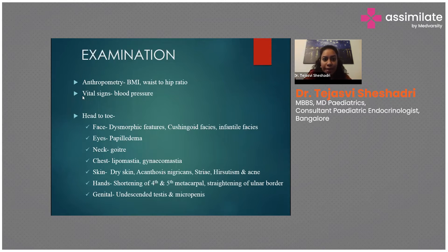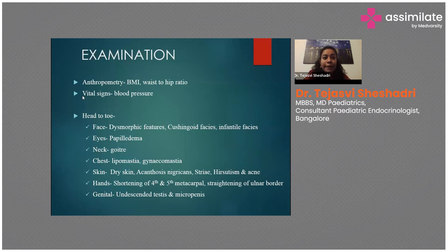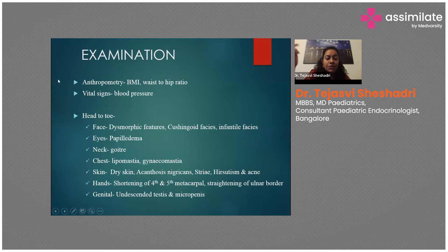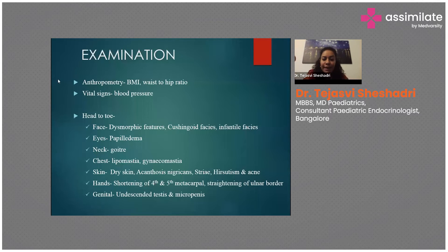On examination, assess BMI to diagnose obesity. Waist-to-hip ratio: more than 0.95 in boys and more than 0.85 in girls. Waist circumference more than the 90th centile is significant. Check vitals — blood pressure is very important; if the child is hypertensive, manage with antihypertensives or lifestyle measures. The head-to-toe examination gives clues about complications and cause. In exogenous obesity the child may be completely normal on examination except for complications.